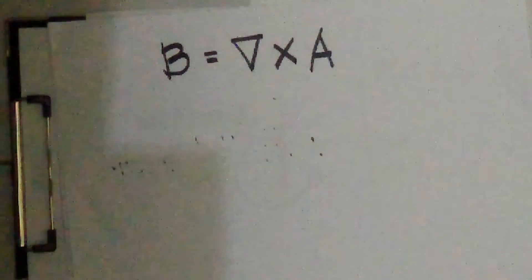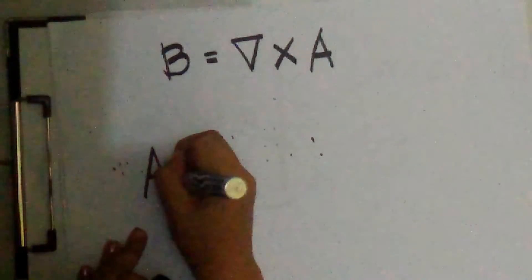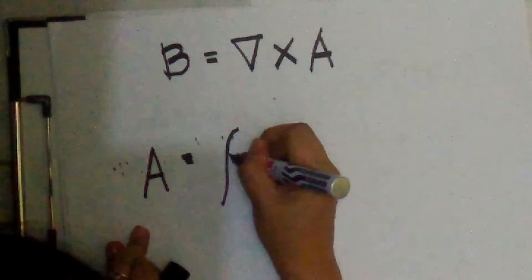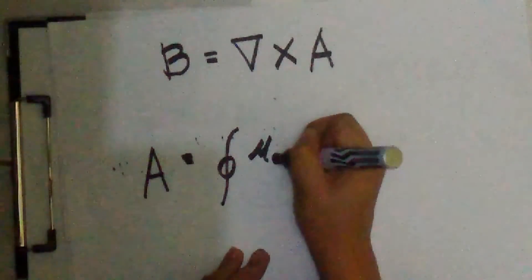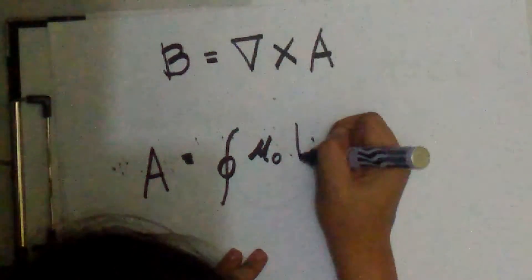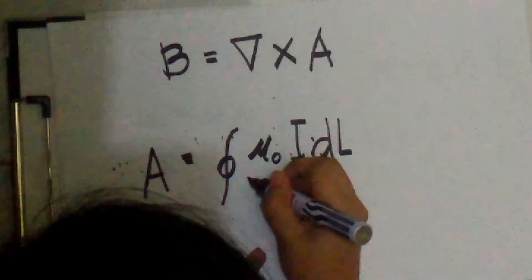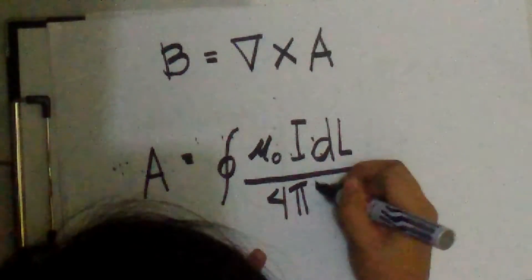Given that B is equal to gradient cross product of A, then A may be determined from the differential current elements by A is equal to closed integration, permittivity of free space times I dL all over 4π R.